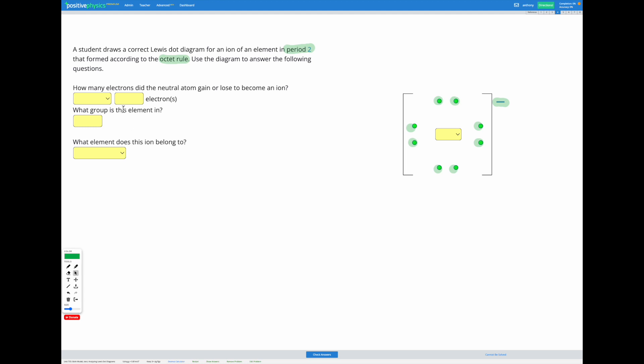The first question asks how many electrons did the neutral atom gain or lose to become an ion. If it has a charge of minus one, that means it's gained a negative electron. So this one has gained one electron to gain a charge of negative one.